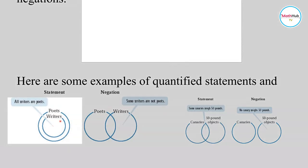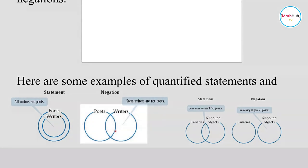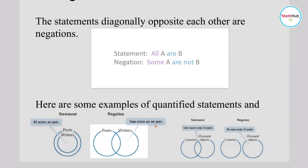In the Venn diagram, when everything is inside one set and you negate that, you say not everything in that region is inside the other. That's how you end up with the negation representation. Remember: the negation of 'all' is 'some,' and the negation of 'are' is 'are not.'